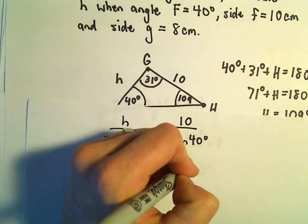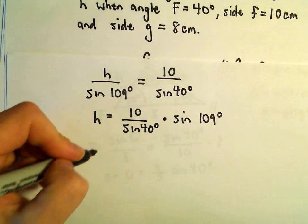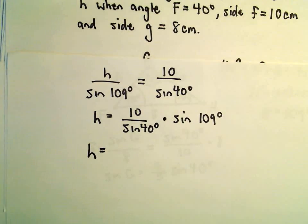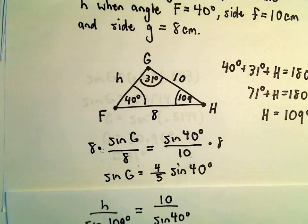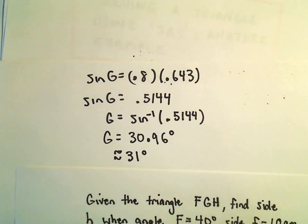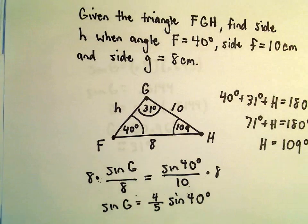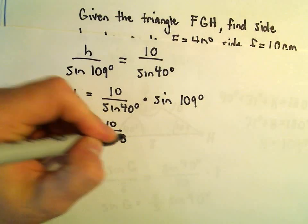So sine of 109 degrees. And again, now it's just doing a little bit of arithmetic. So I think just a second ago we said sine of 40 degrees. That was 0, where did it go? We said 0.643. So 0.643.